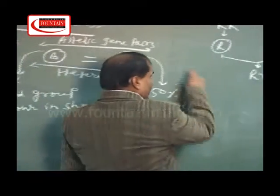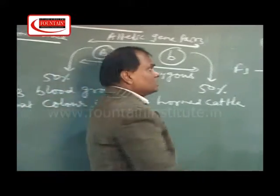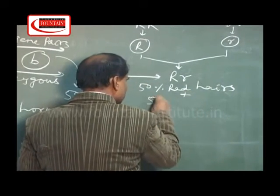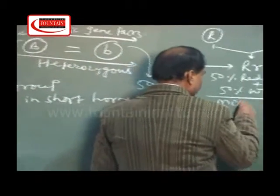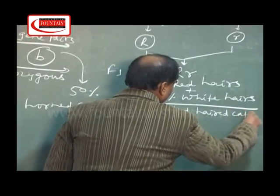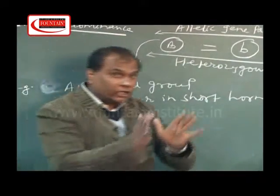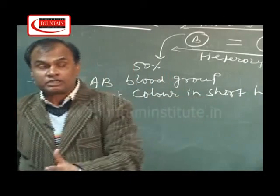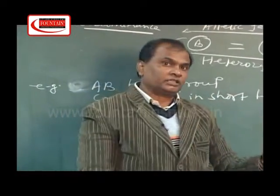So this is the F1 generation cattle. In F1 generation, both alleles will express themselves, meaning 50% red hairs plus 50% white hairs. This means in F1 generation we get mixed-haired cattle. Mixed-haired cattle is technically called roan. So when we cross red-haired cattle with white-haired cattle, in F1 generation 100% cattle will be of roan nature, with 50% hairs red and 50% hairs white.